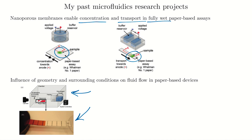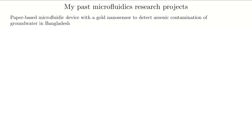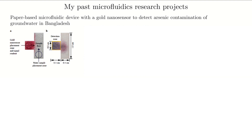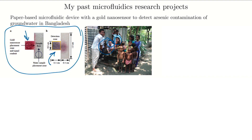We also made a paper-based microfluidic device with a gold nanosensor to detect arsenic contamination of groundwater in Bangladesh. We had student partners from Bangladesh and actually traveled there to do testing. The device is a small T-shaped piece of paper — the gold nanoparticles start out red, and when exposed to arsenic from the water sample, they change to a more black color. This allowed us not just to detect whether arsenic was present, but to quantify how much there was. I'm shown here with my student Nushin testing tube wells, along with Mosfera and Mostasim.